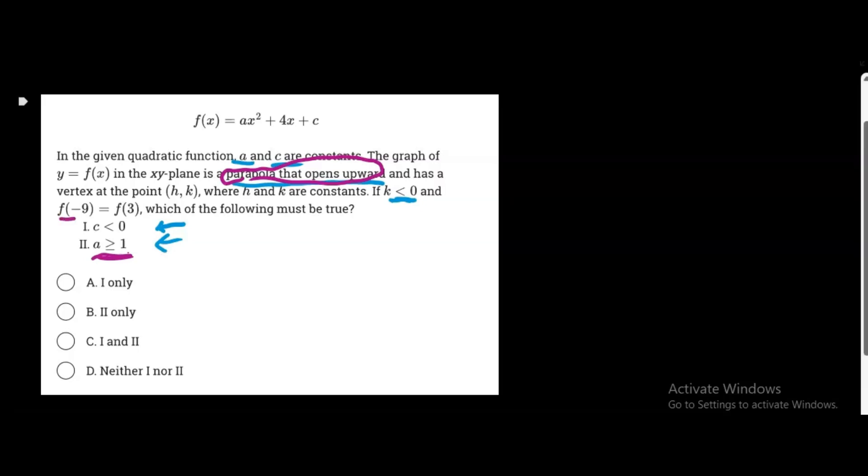And we can't, because they give us this information, f of negative 9 equals f of 3. So the standard equation they give us is ax² plus 4x plus c, right? And they give us the x coordinates, basically. So we can plug in negative 9 for x, so negative 9 squared is 81. And we'll just say 81a, because we're solving for a, right? Plus 4x, so 4 times x would just be negative 36, so plus negative 36 plus c.